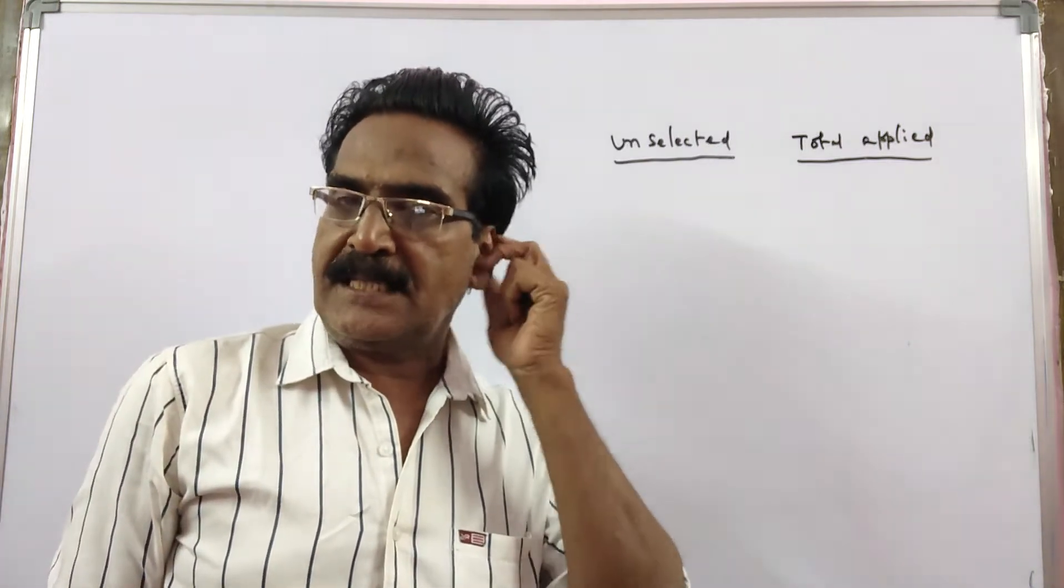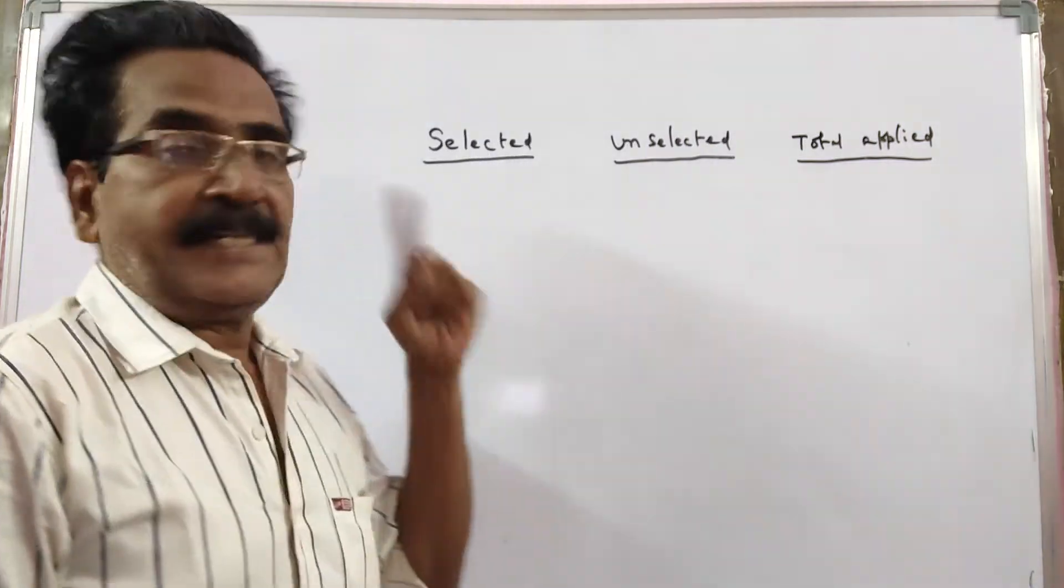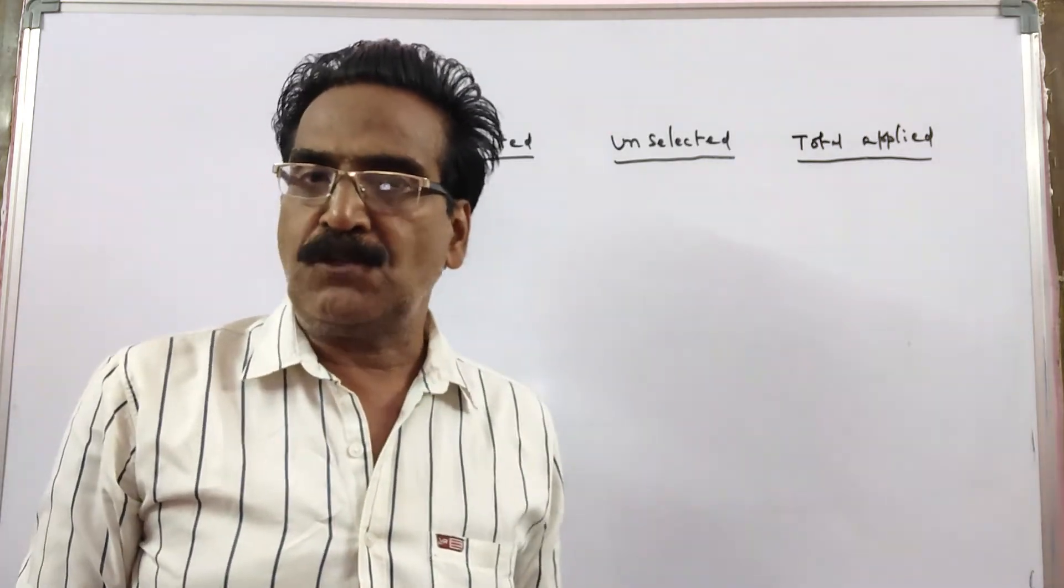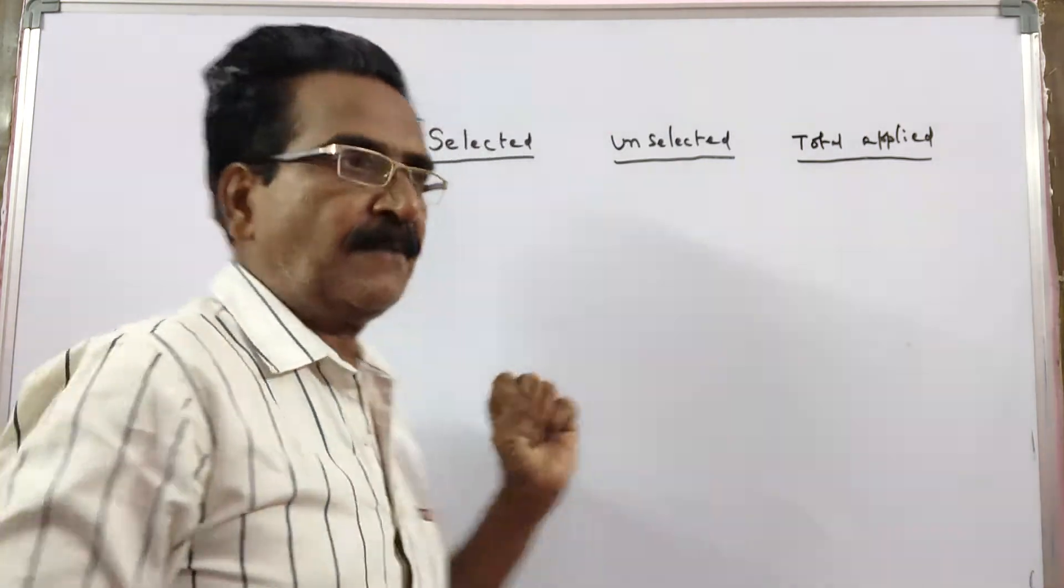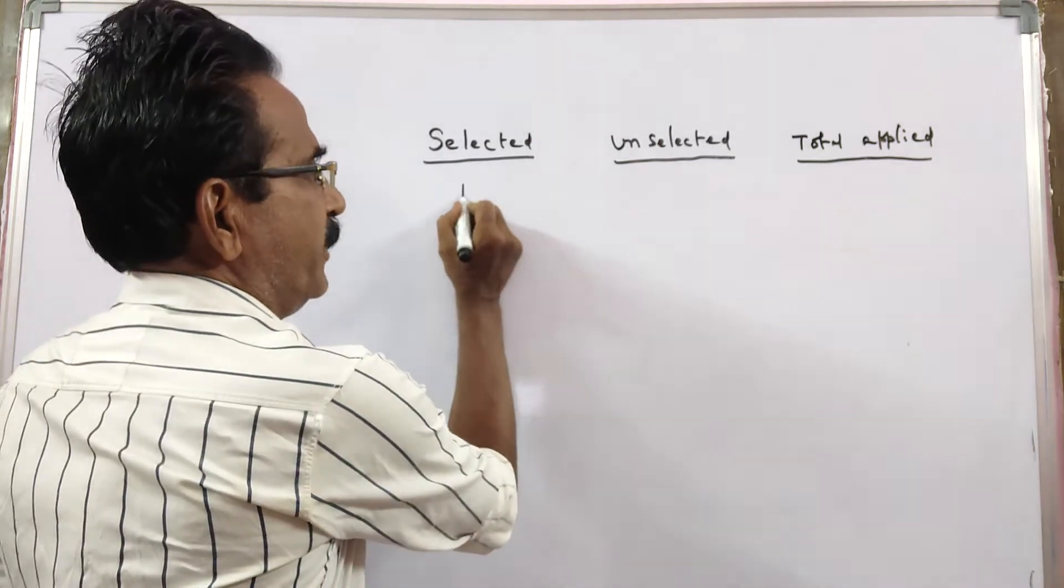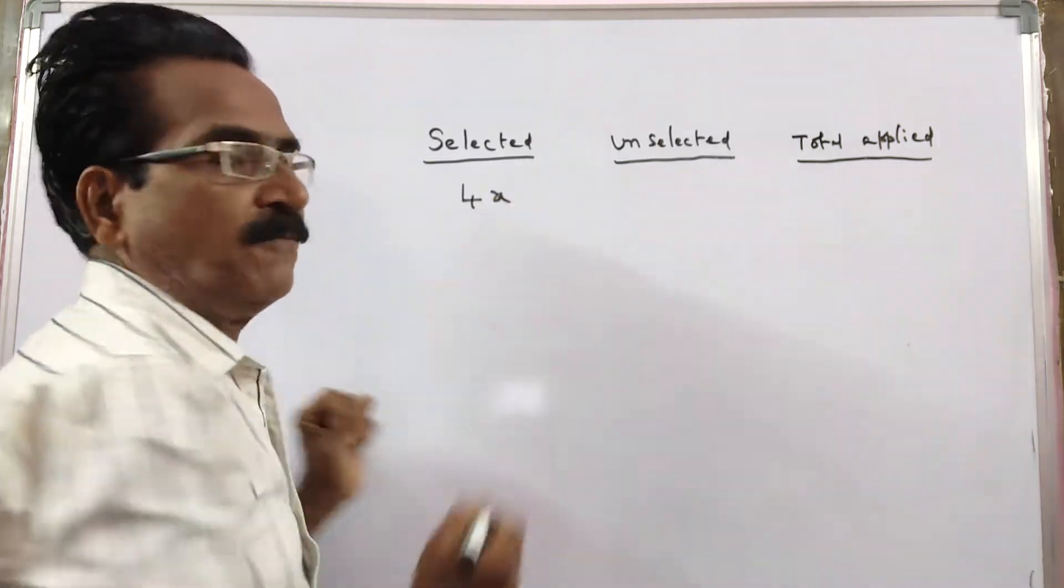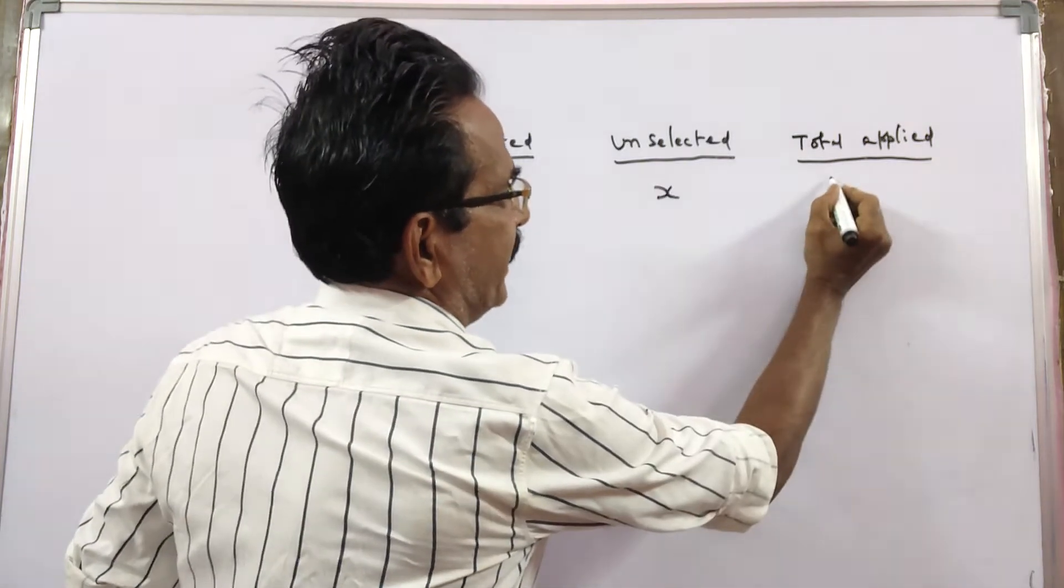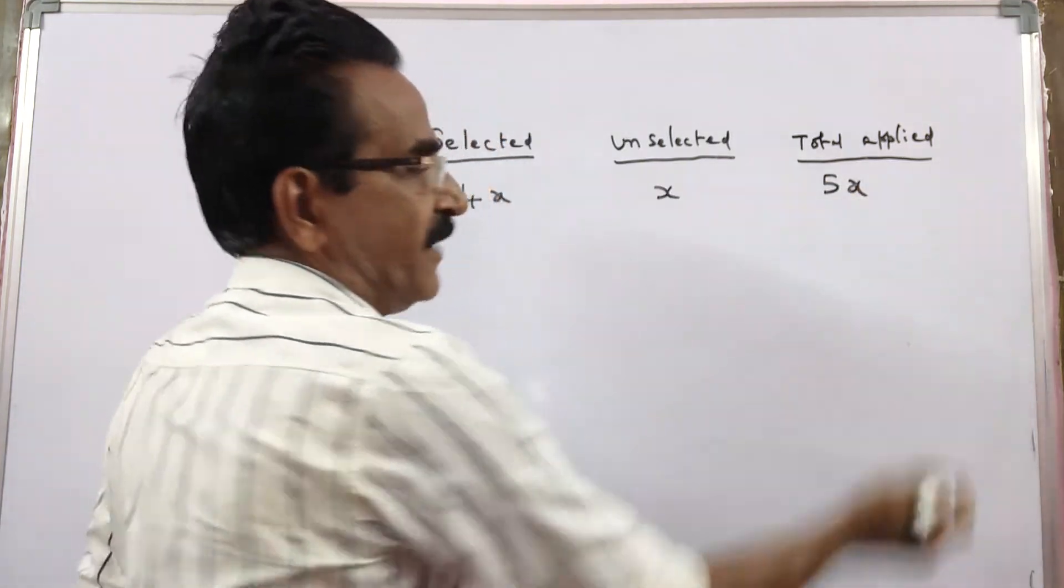See friends, in an army selection process, the ratio of selected and unselected is 4 is to 1. That is, the number of selected is 4x and the number of unselected is 1x, and the total number of candidates applied is 5x.